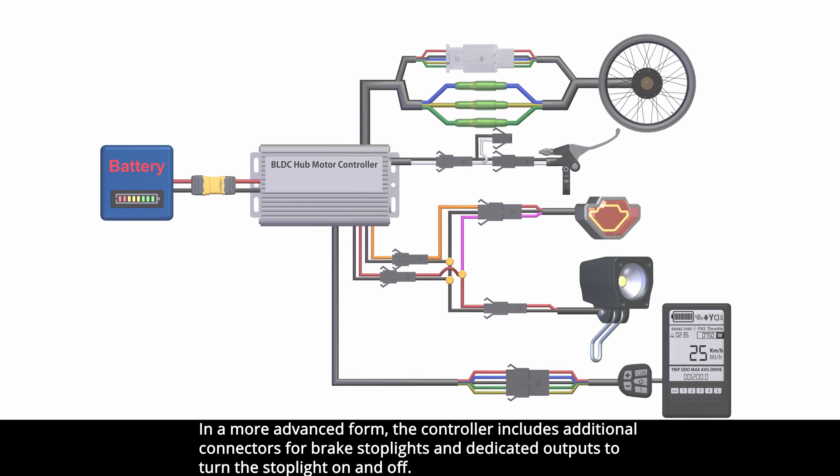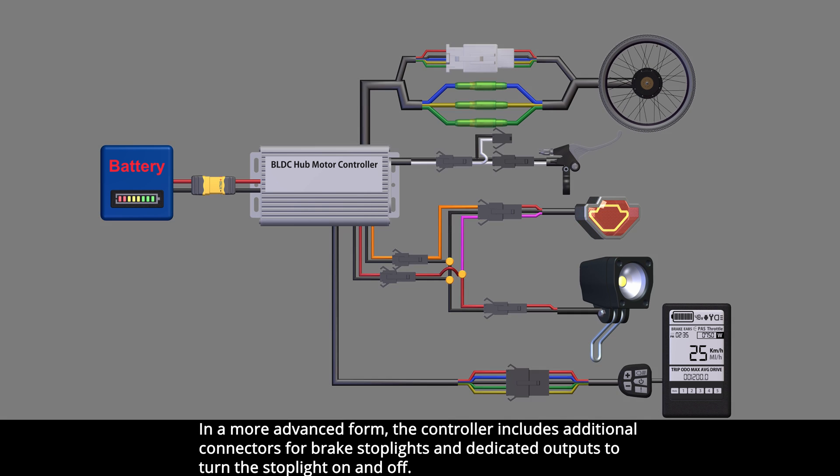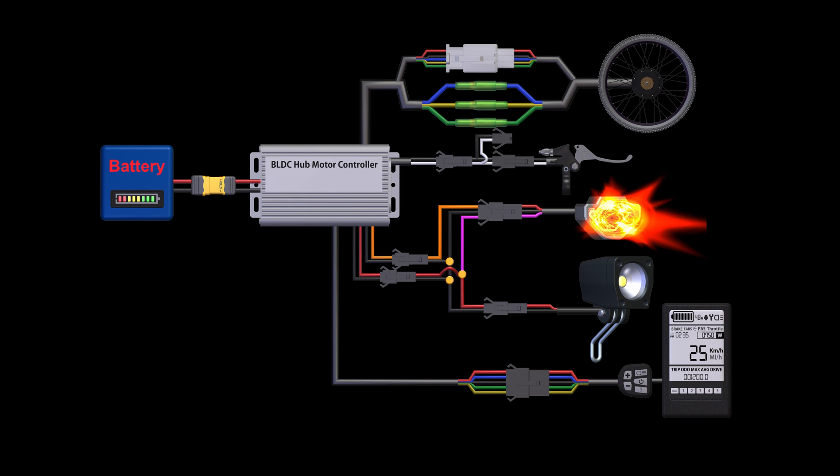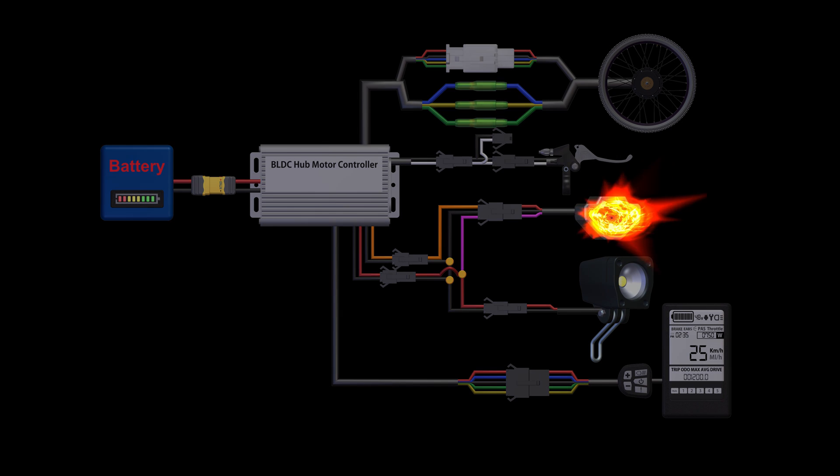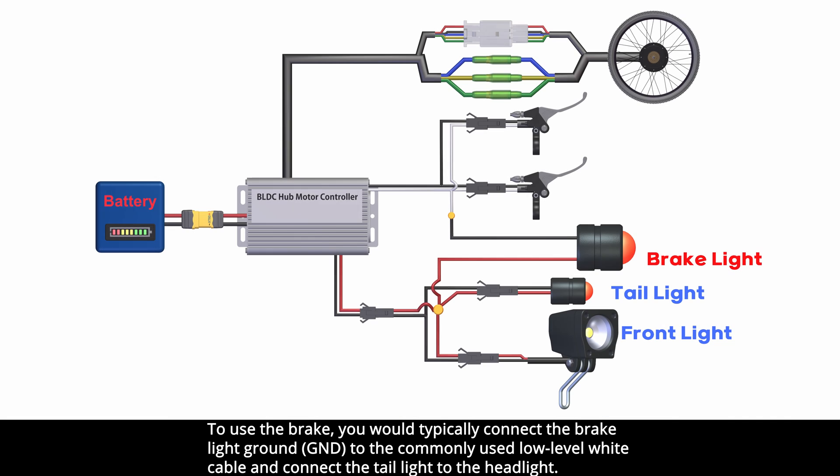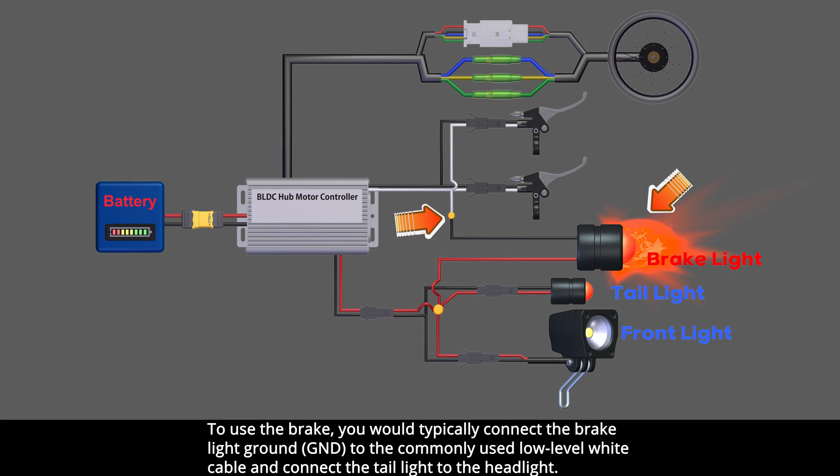In a more advanced form, the controller includes additional connectors for brake stoplights and dedicated outputs to turn the stoplight on and off. To use the brake, you would typically connect the brake light ground to the commonly used low-level white cable and connect the tail light to the headlight.